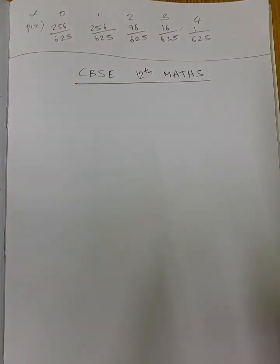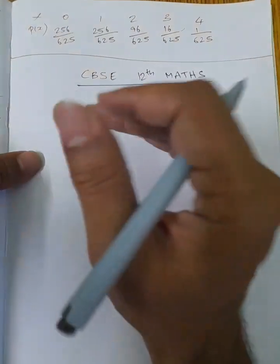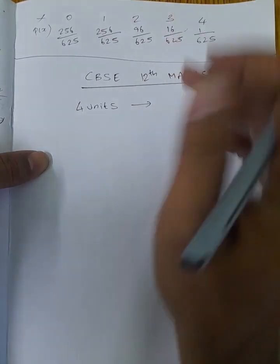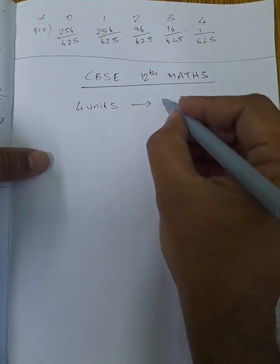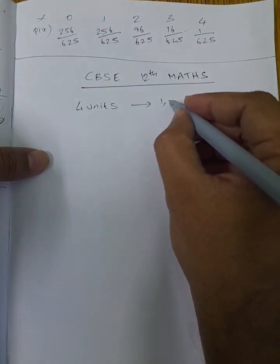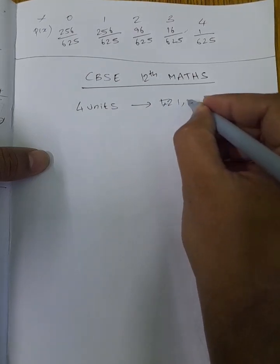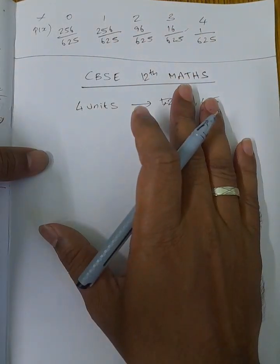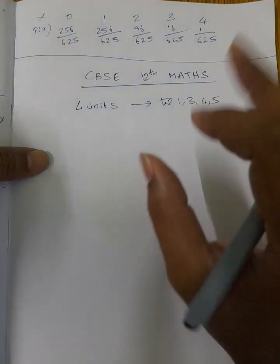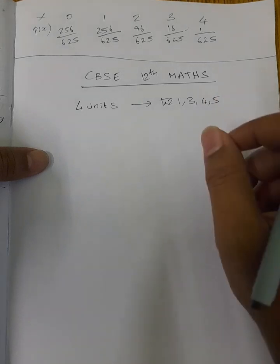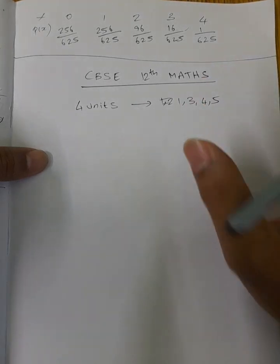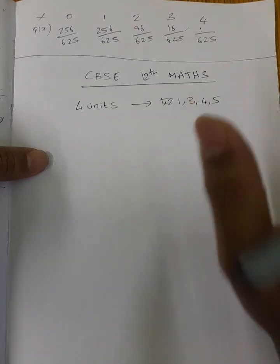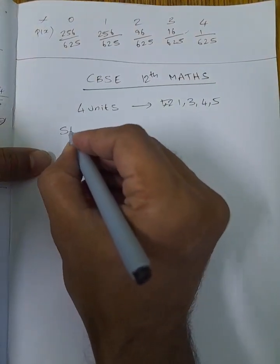Product rule, quotient rule — all the formulas are top to bottom in the formulas page. In total, the initial unit has 4 units. You can download the PDF from the description.